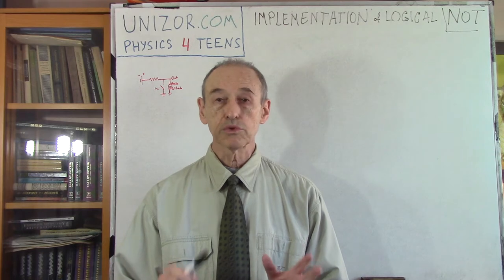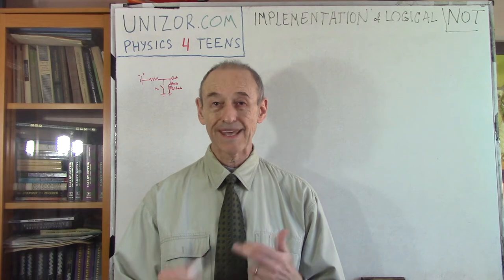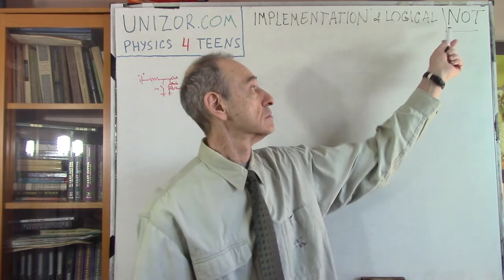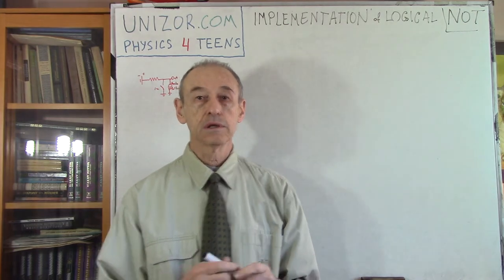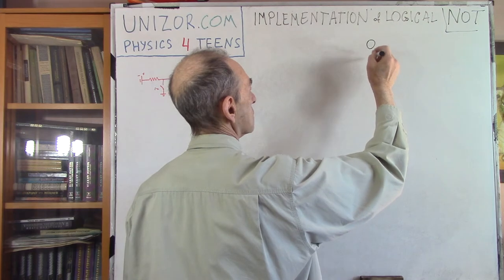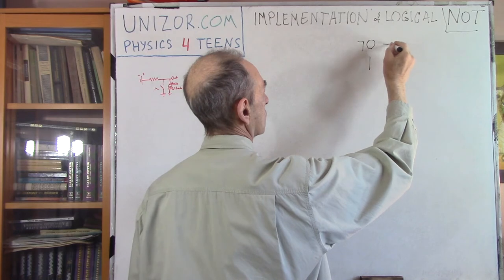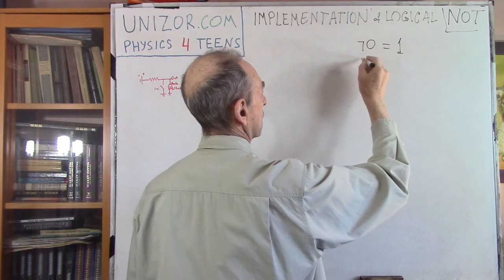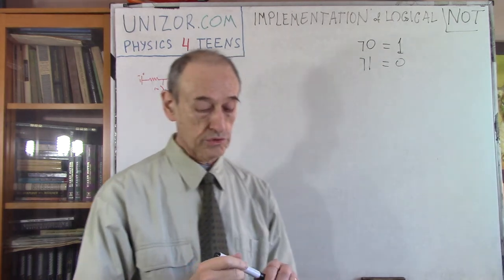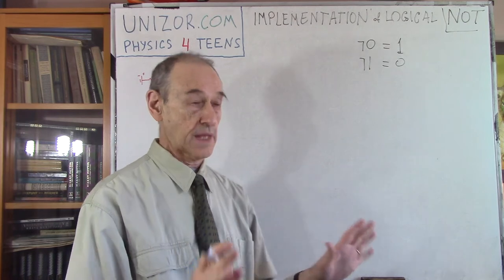Today we will talk about unary operation, which is negation or inverting, NOT operation. Obviously, NOT operation has only two different arguments, and the result of the operation is not 0 is 1, and not 1 is 0. Not true is false, not false is true. That's by definition.